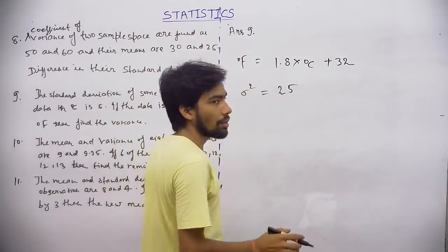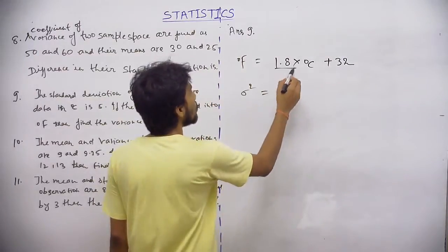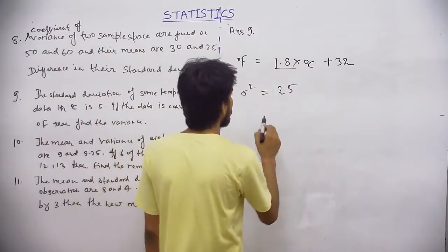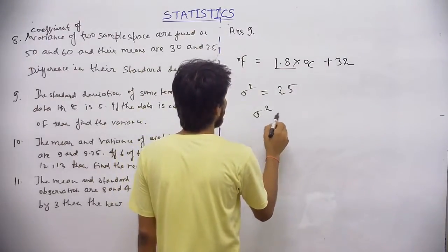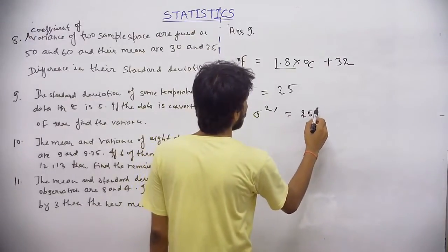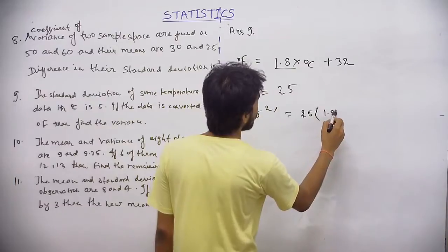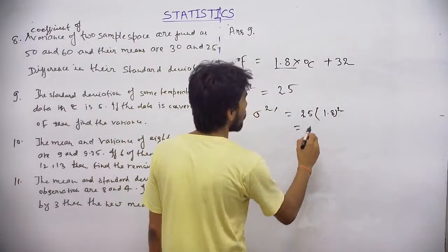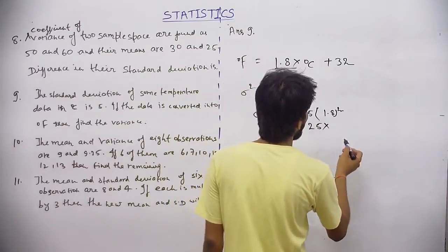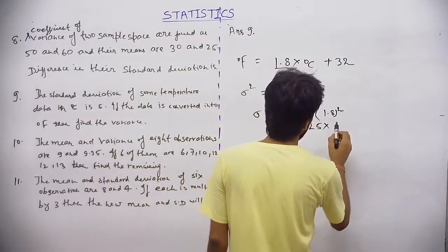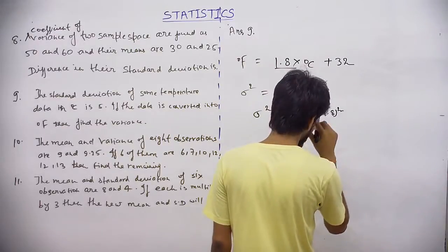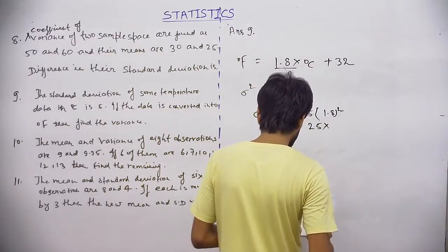It will be 25. So here the constant is 1.8, so what will be the variance of the new observation? This will be 25 into constant squared.